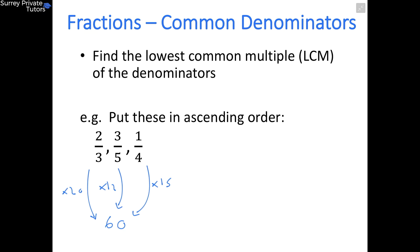So if we write out our new fractions, 2 thirds, the denominator is going to be 60. And then to find the numerator, all you do is multiply your old numerator by this number over here. So we're going to do 2 times 20, and that's going to give us 40.